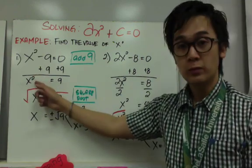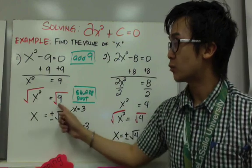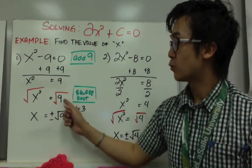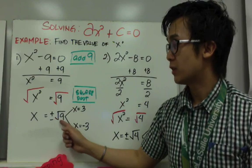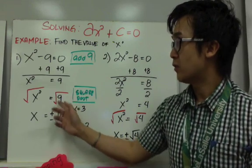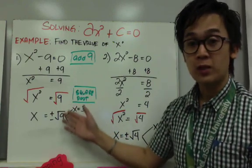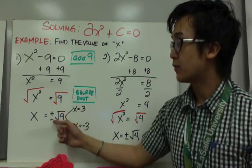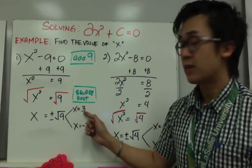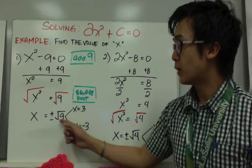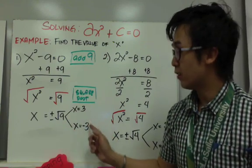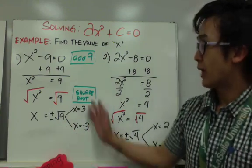To get rid of the exponent of 2 in x, we take the square root of both sides. The square root of x squared is simply x, and the square root of 9 is equal to plus or minus the square root of 9. We include plus or minus because we are not certain if the answer is positive or negative. So the square root of 9 is 3, and the negative square root of 9 gives x equals negative 3. Therefore, x equals plus or minus 3.